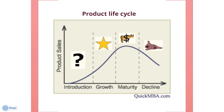The natural cycle for most business units is that they start as question marks, then turn into stars. Eventually, the market stops growing, and the business unit becomes a cash cow. At the end of the cycle, the cash cow turns into a dog.